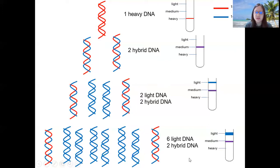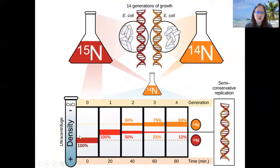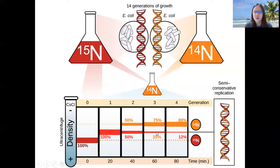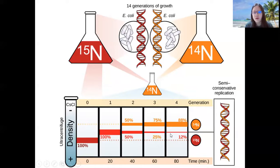They can take these numbers and make them into percentages. At generation zero, you have 100% very dense DNA — completely nitrogen-15. At generation one, you have 100% medium hybrid DNA. At generation two, you have 50-50: two light DNA and two hybrid DNA. Later on, you have two hybrid DNA and six light DNA, which means a 25 to 75 percent ratio. If you repeat a fourth generation, you can expect the medium band to be maintained, and there will always be that hybrid fraction while the rest will be light DNA.